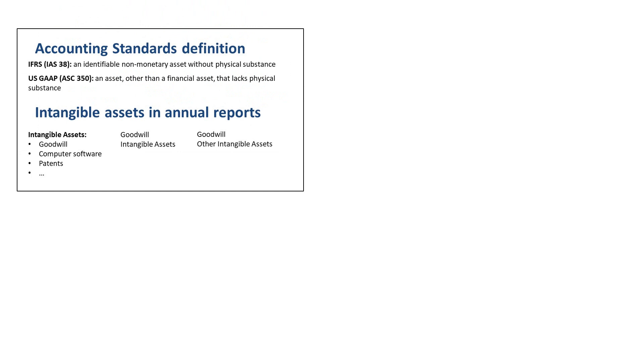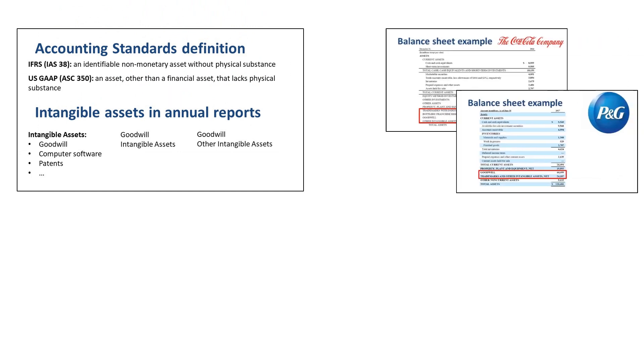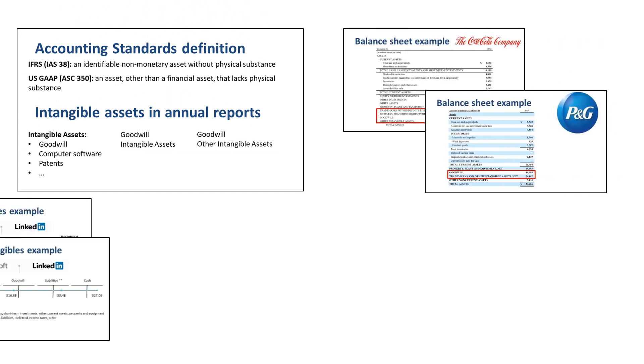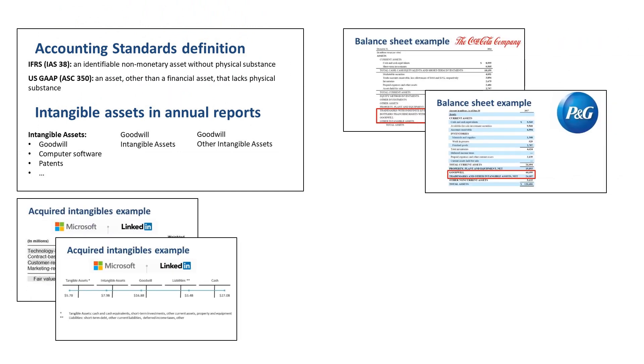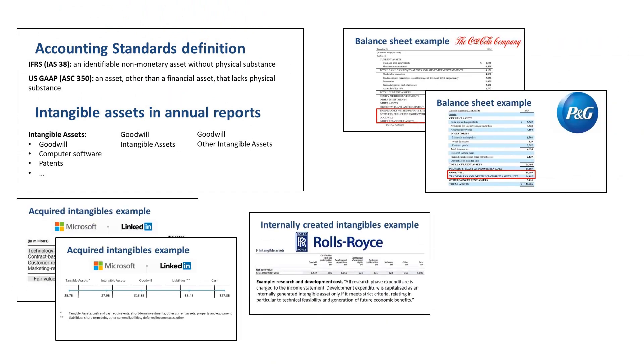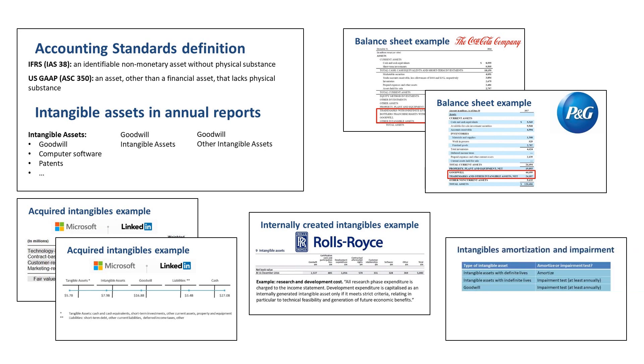That wraps up our intangible assets discussion: definition, real-life examples, acquired versus internally created intangible assets, journal entries, and amortization and impairment.